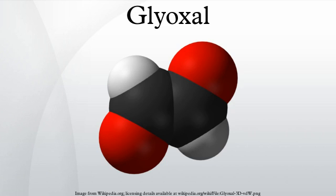Commercial glyoxal is prepared either by the gas phase oxidation of ethylene glycol in the presence of a silver or copper catalyst, or by the liquid phase oxidation of acetaldehyde with nitric acid. Global nameplate capacity is 220,000 tons, with production rates less due to overcapacity mostly in Asia. Most production is done via the gas phase oxidation route.